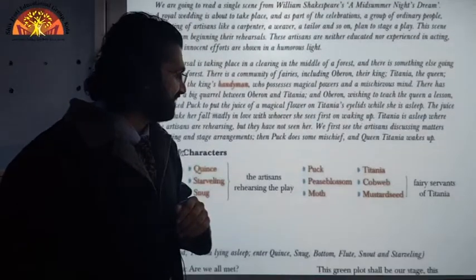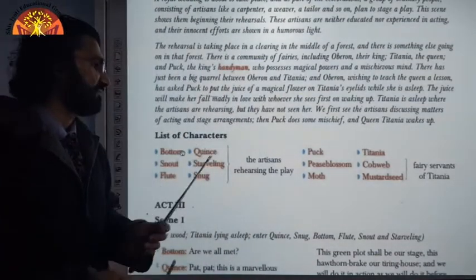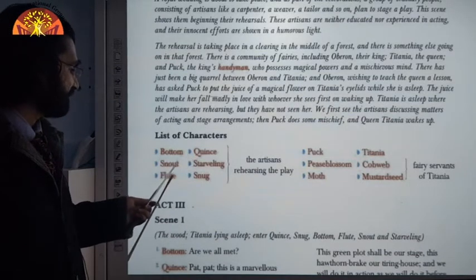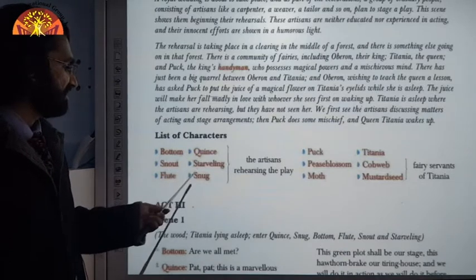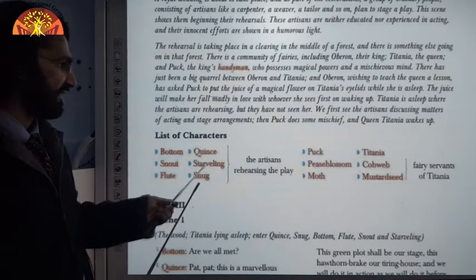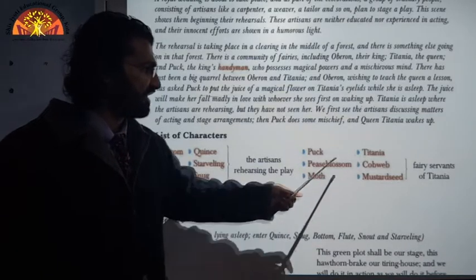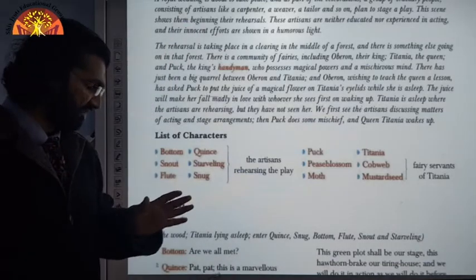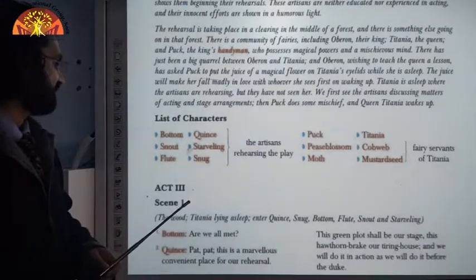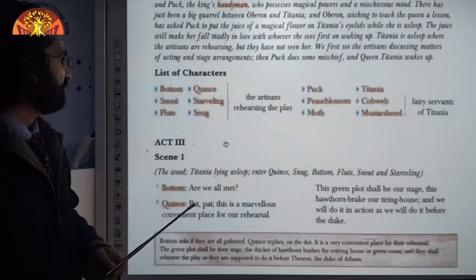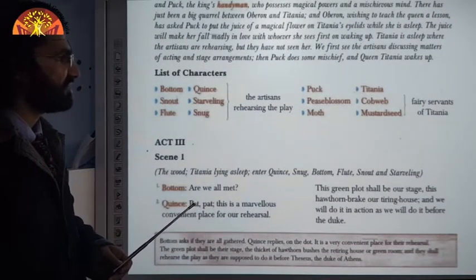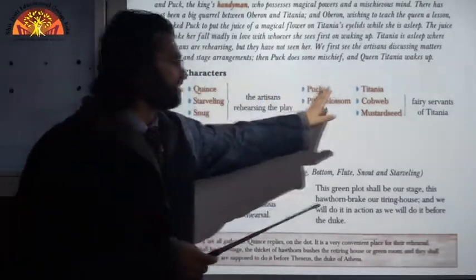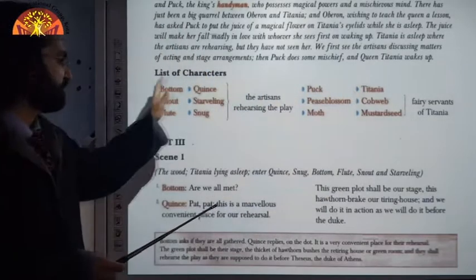There are some characters given, and about some of them we have already talked. The artisan characters are: Bottom, Snout, Flute, Quince, Starveling, and Snug. Then there is Puck, Peaseblossom, Moth, Titania, Cobweb, and Mustard Seed. These are the major characters in the story — some from the fairy world and some from the human world.